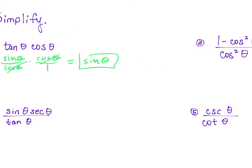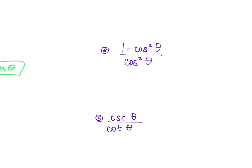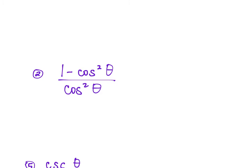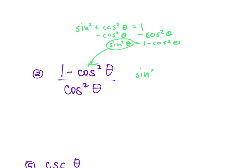These are good practice for algebra skills. We can't just cancel cosine² from the top and bottom here. But 1 minus cosine² looks like one of our identities: sine² θ equals 1 minus cosine². So we substitute sine², giving us sine² over cosine². Since sine over cosine is tangent, sine² over cosine² is tangent².